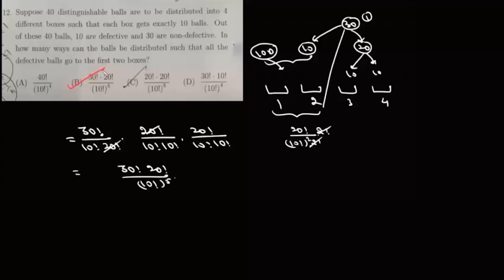Now in this question, there are 40 distinct balls which are to be placed in four distinct boxes such that each box has 10 balls. Out of these 40 balls, 10 are defective, and these 10 balls are to be distributed in the first two boxes, and we need to find how many ways it can be done. Let us say we have four boxes: 1, 2, 3, and 4. Now the defective balls can only go to box 1 and 2, so all the defective balls are already here.